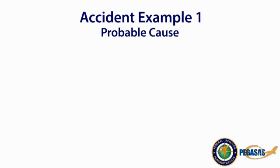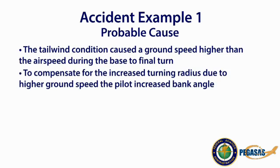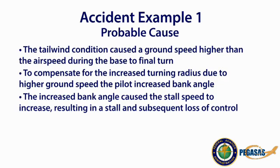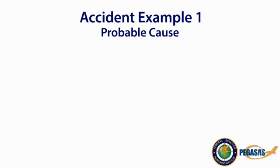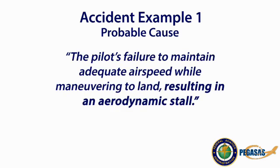The NTSB determined the probable cause to be the tailwind condition, which caused a ground speed higher than the airspeed during the base to final turn. To compensate for the increased turning radius due to the higher ground speed, the pilot increased the bank angle. The increased bank angle caused the stall speed to increase, resulting in a stall and subsequent loss of control. The NTSB determined the probable cause to be the pilot's failure to maintain adequate airspeed while maneuvering to land, resulting in an aerodynamic stall. This is the key part of loss of control in flight, where maneuvering flight is the top phase where fatal loss of control is most likely to occur.